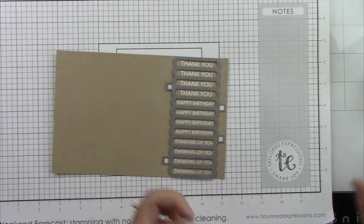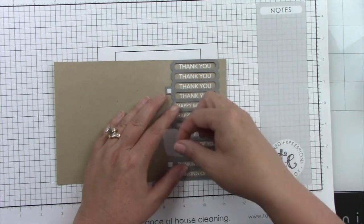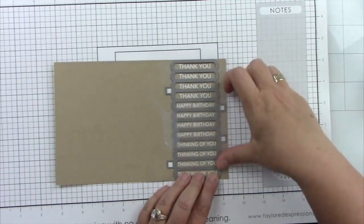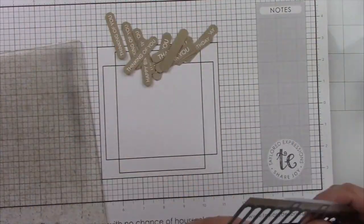And here is the coordinating stencil. And as you can see, I'm just going to line up those little squares that were embossed with the squares on the die and run that through the die cut machine. And now we have tons of sentiments.